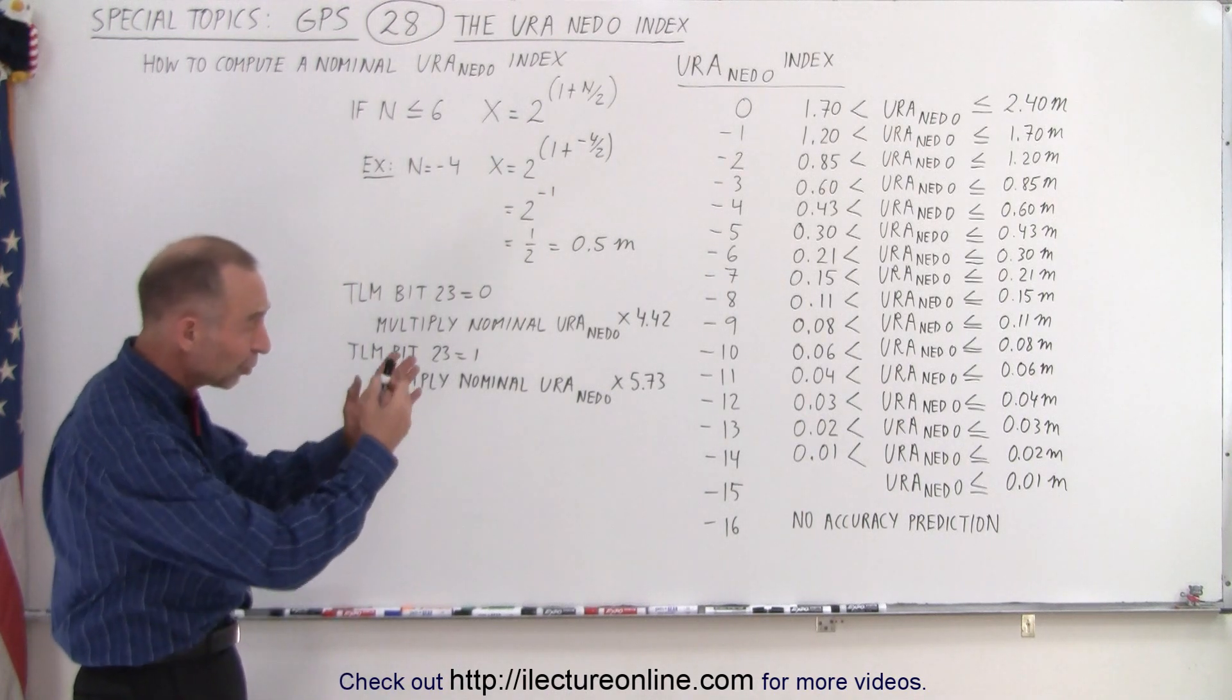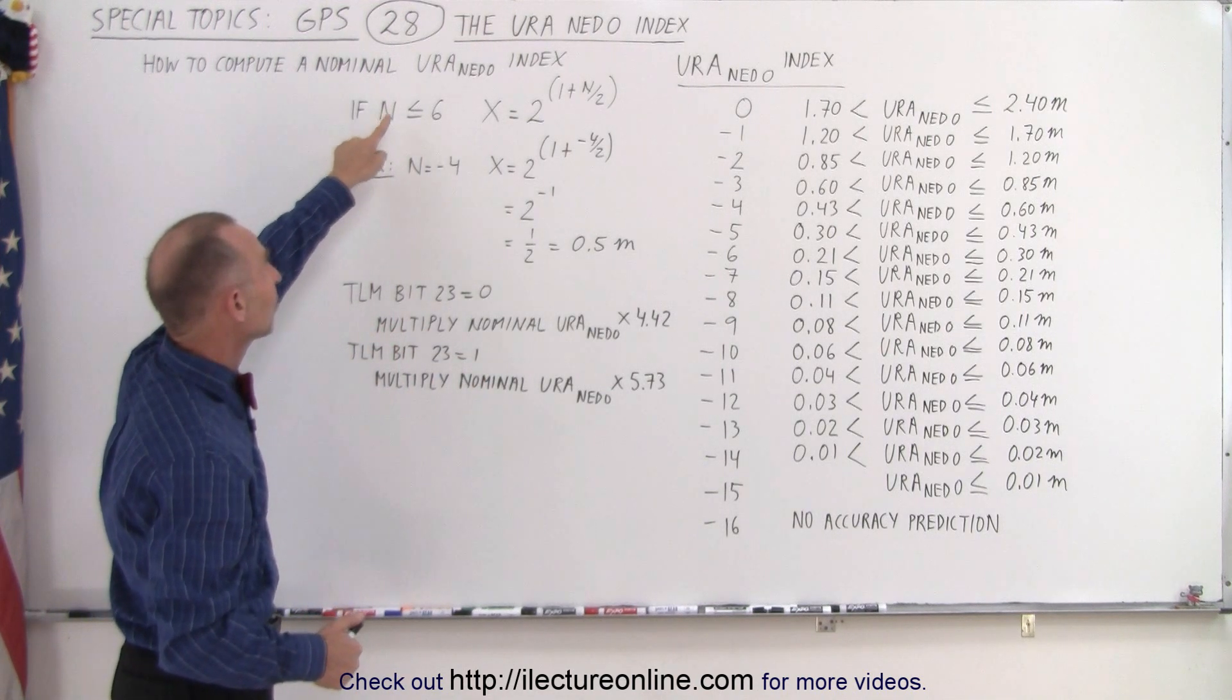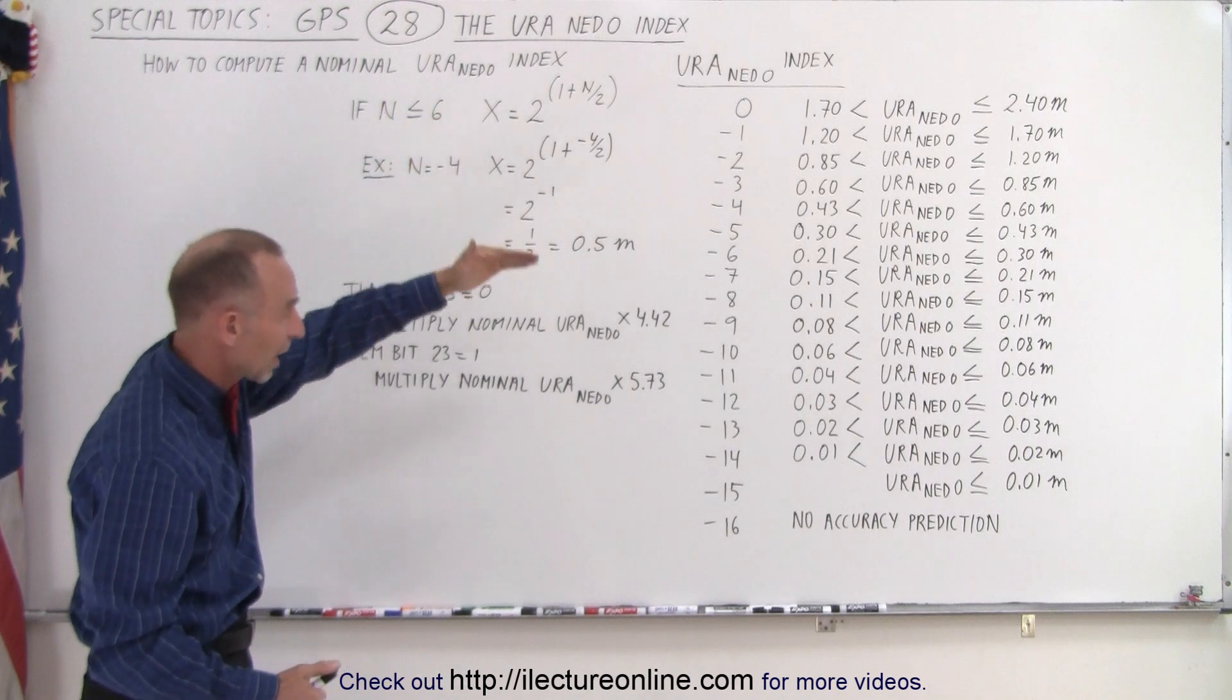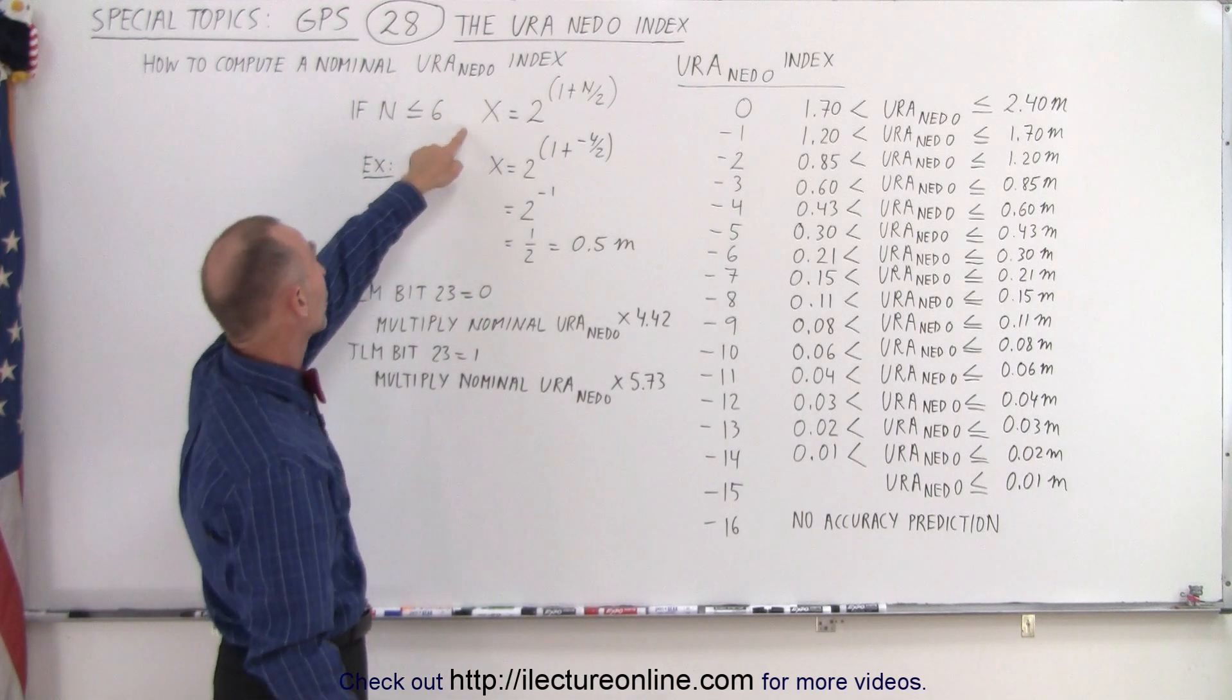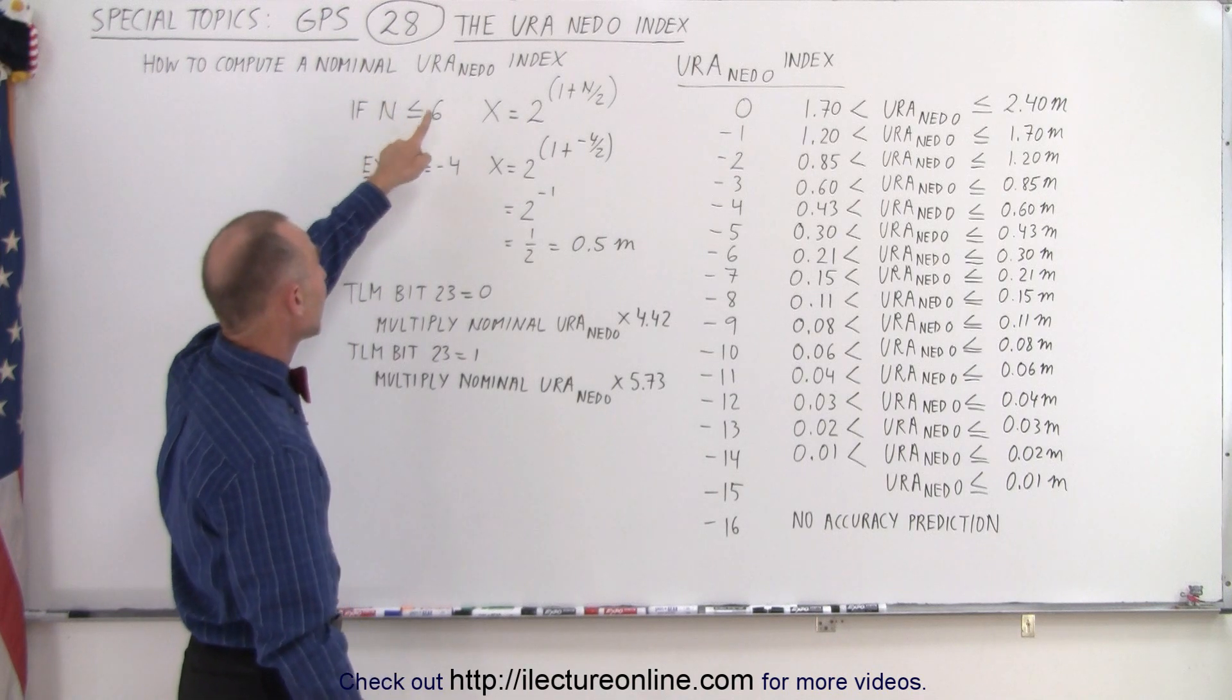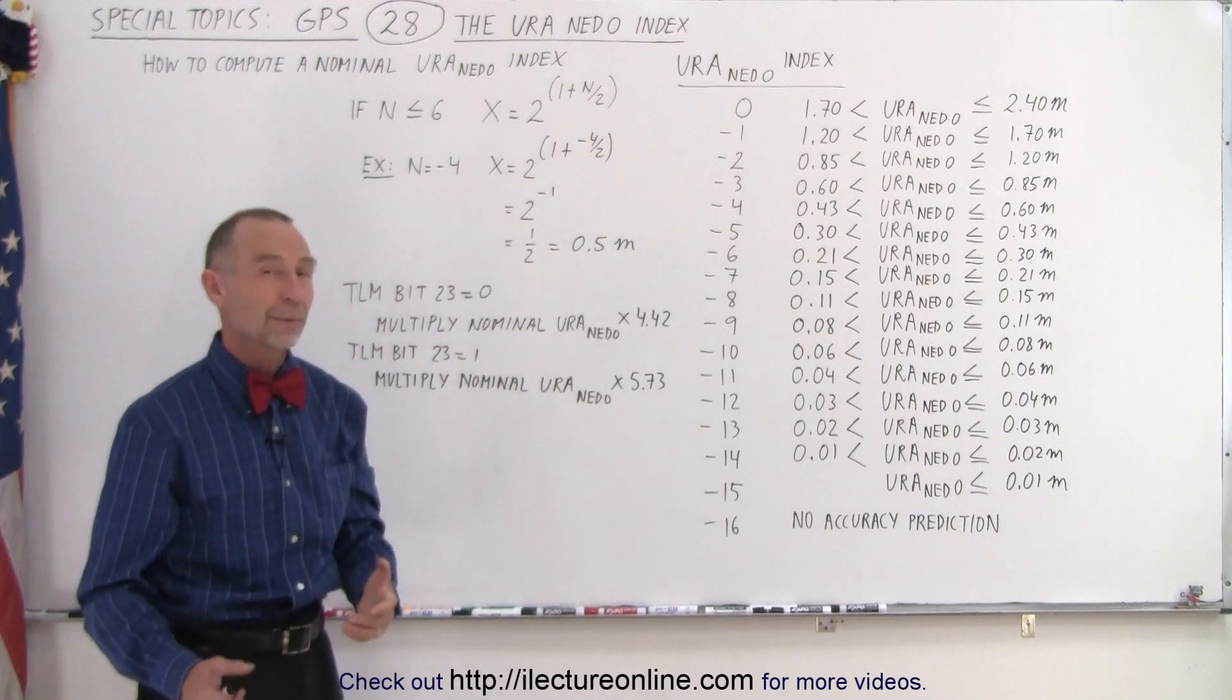Now instead of using the range right here, what we've also done is we have an equation where if n is less than or equal to 6, positive 6 down to smaller or negative numbers, we can calculate what we call the nominal URA NED zero index by taking 2 raised to the (1 + n/2) power.